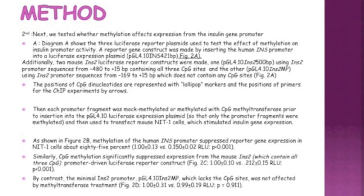Each promoter fragment was either mock-methylated or methylated with CpG dinucleotide methyltransferase prior to insertion. As shown in figure 2B, methylation of the human insulin promoter suppressed reporter gene expression in the cells by about 85%. Similarly, methylation suppressed expression from the mouse insulin construct containing all three CpG sites. These results indicate that CpG sites and their demethylation status are important for both basal and stimulated insulin gene expression.